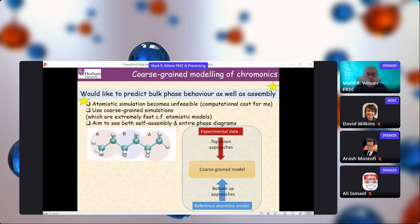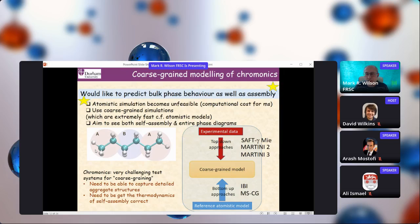Essentially there's two main approaches to do this and you'll have seen some of this from talks earlier in this meeting. Either to use experimental data to help us - these are the top-down approaches to coarse graining - or to use a reference atomistic model, the bottom-up approaches. The latter is to use techniques like iterative Boltzmann inversion or the multi-scale coarse graining method of Voth and Izvekov and others. For the top-down approaches you can use things like SAFT-gamma-Mie and the engineering approaches or indeed Martini models which are often used for biological simulations. Chromonics provides an extremely challenging test system for coarse graining because we need to capture both the details of the aggregation but also the thermodynamics of the self-assembly. Both of those together are a major challenge.